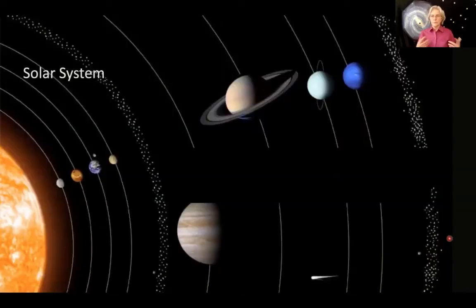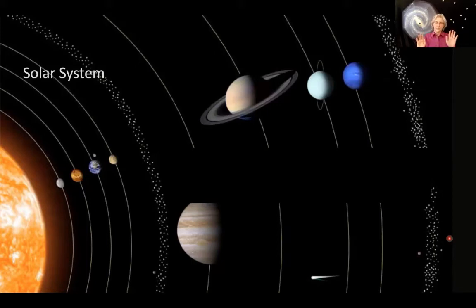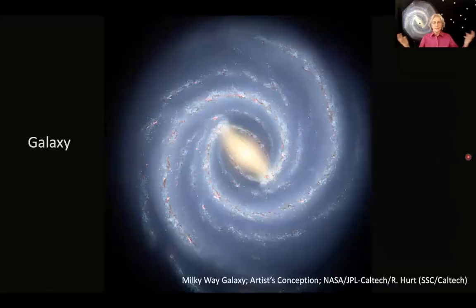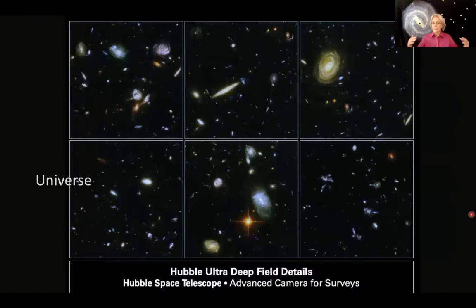Before we go too much farther, I wanted to reiterate what we talked about in our first session — the difference between the solar system, the galaxy, and the universe. It's very common that people use those terms interchangeably. So let's make sure we have all our terms understood. The solar system is the sun and all the planets. Our galaxy is the sea of stars we live in — our sun is one of those 200 billion stars. And the universe is all the galaxies; our galaxy is one of several hundred billion galaxies in the universe.